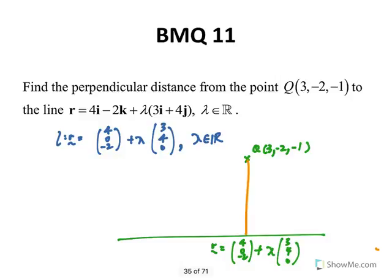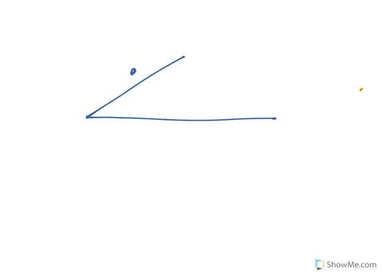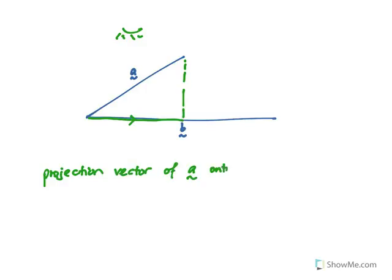We need to find this perpendicular distance. There are a lot of ways to go about doing this. Method one: recall from Vectors Part 1, if we have a free vector A and a direction vector B, the projection vector of A onto B is equal to A dot B-hat, times B-hat.